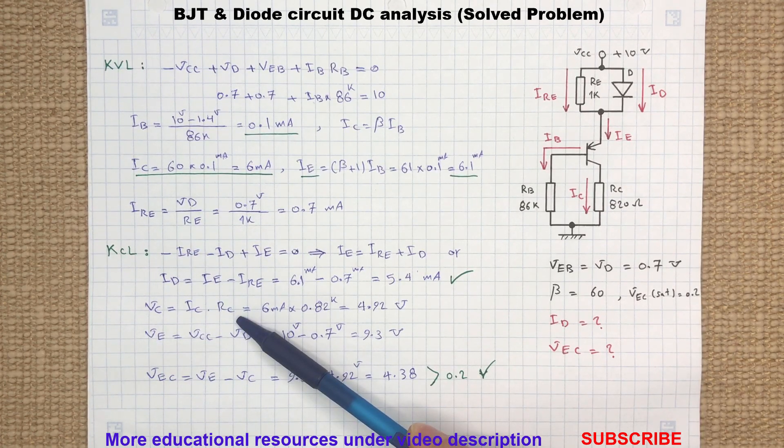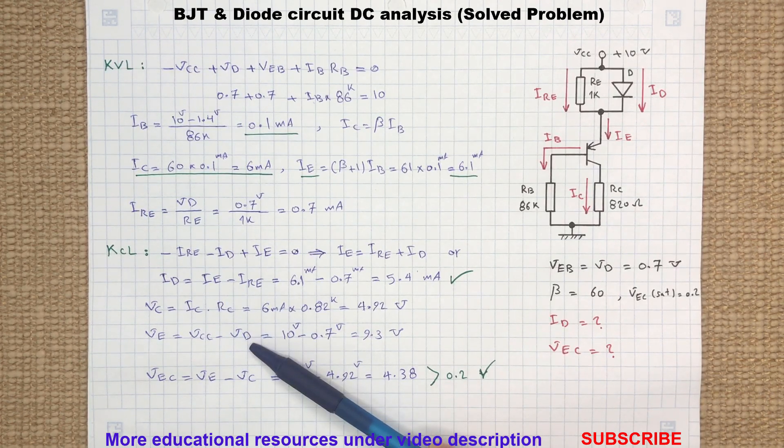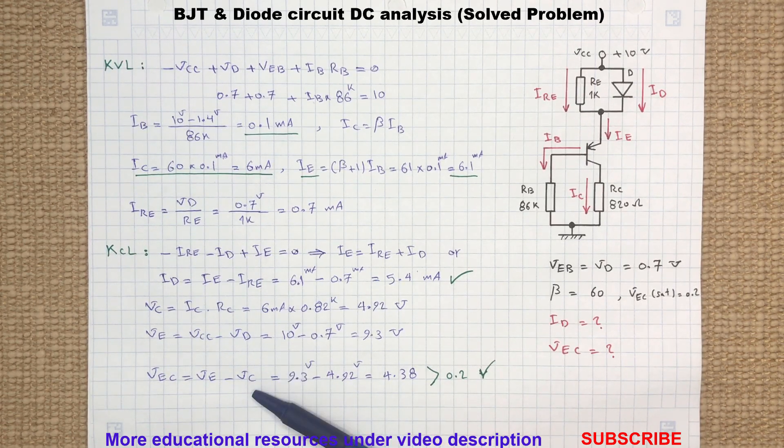The voltage at the collector can be determined by multiplying the collector current by the collector resistor RC. The voltage at the emitter terminal will be the supply voltage minus the voltage drop across the diode. The voltage drop at the emitter-collector terminals will be the emitter voltage minus the collector voltage.